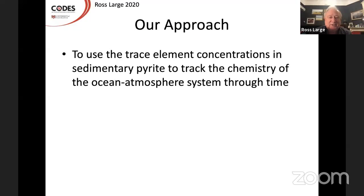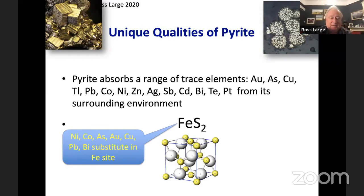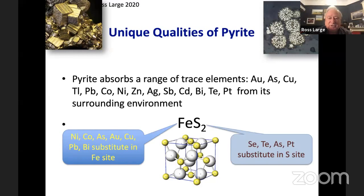Our approach has been to use the trace element concentrations in sedimentary pyrite to track the chemistry of the ocean-atmosphere system through time, and then to see how that relates to the ore deposits. The unique quality of pyrite that we use in this study is that sedimentary pyrite absorbs a range of trace elements. We've got a whole range of trace elements that substitute for iron in the iron site, another group that substitute for sulfur, and also many that occur as micro-inclusions — actual micro-inclusions of sphalerite, galena, or chalcopyrite that probably came out of the structure of the pyrite as it aged.